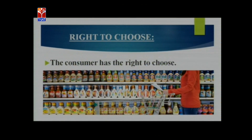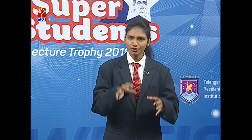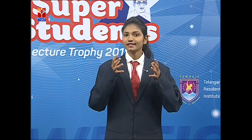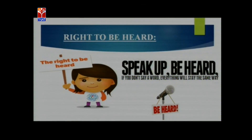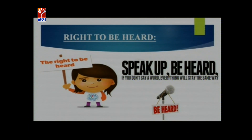The next right is the right to choose. The consumer has a right to choose. If we go to markets, we find a lot of goods of different brands and different companies. A consumer has a right to choose what he wants and what suits him best. There is no force on a consumer to choose a particular product — it is his own intention to select the product he wants. The Consumer Protection Act 1986 provides this right to choose. The next is the right to be heard. If a consumer suffered a loss, he has a right to be heard and can file a complaint at the consumer courts.